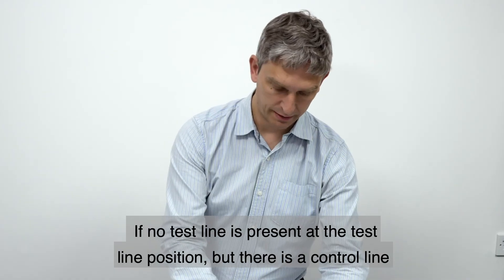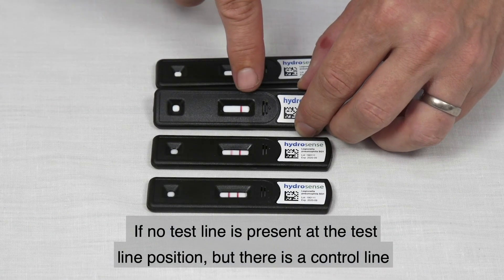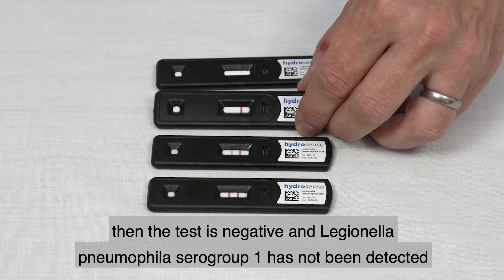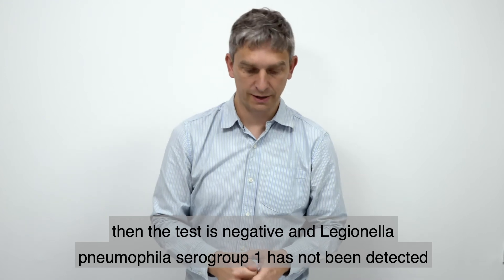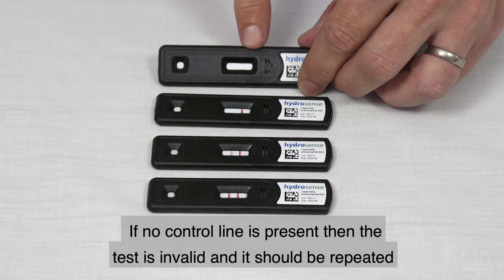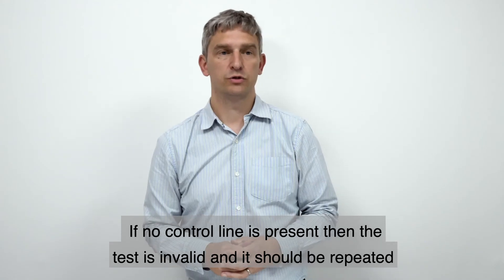If no test line is present at the test line position but there is a control line, then the test is negative and Legionella pneumophila serogroup 1 has not been detected. If no control line is present, then the test is invalid and it should be repeated.